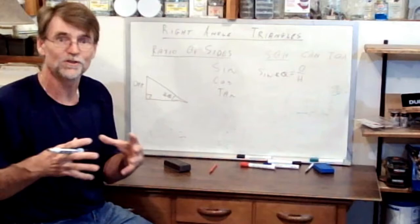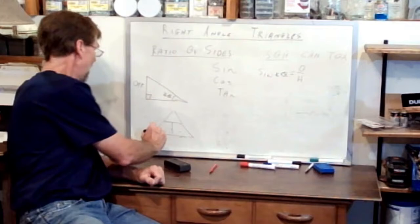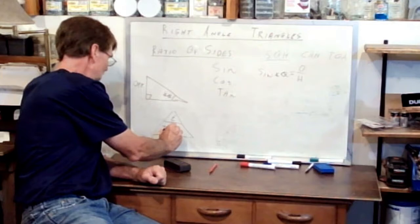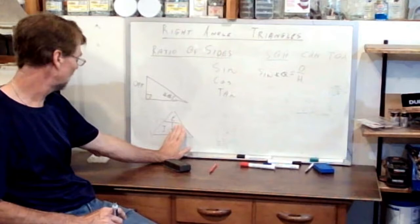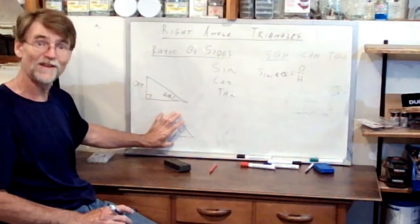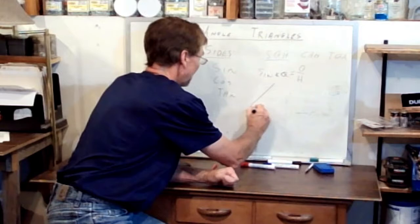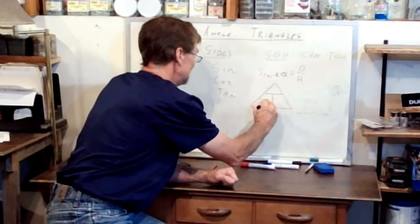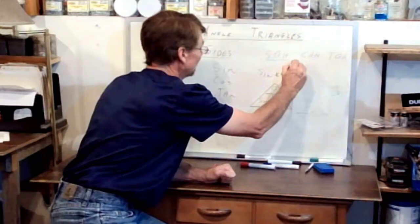You may have seen triangles used to remember Ohm's law, where you break a triangle into three parts: current equals voltage over resistance, and covering each variable gives you the rearranged formula. We can do the same thing here — break a triangle into three parts: sine equals the opposite over the hypotenuse. So there it is, there's the triangle.